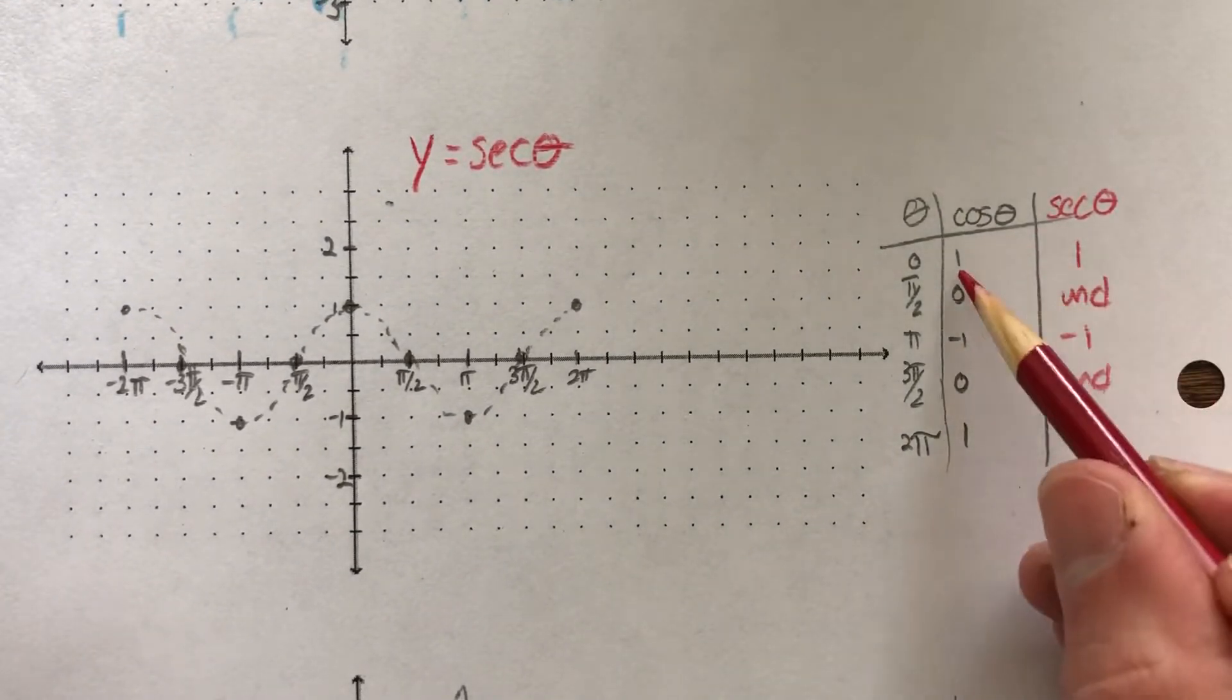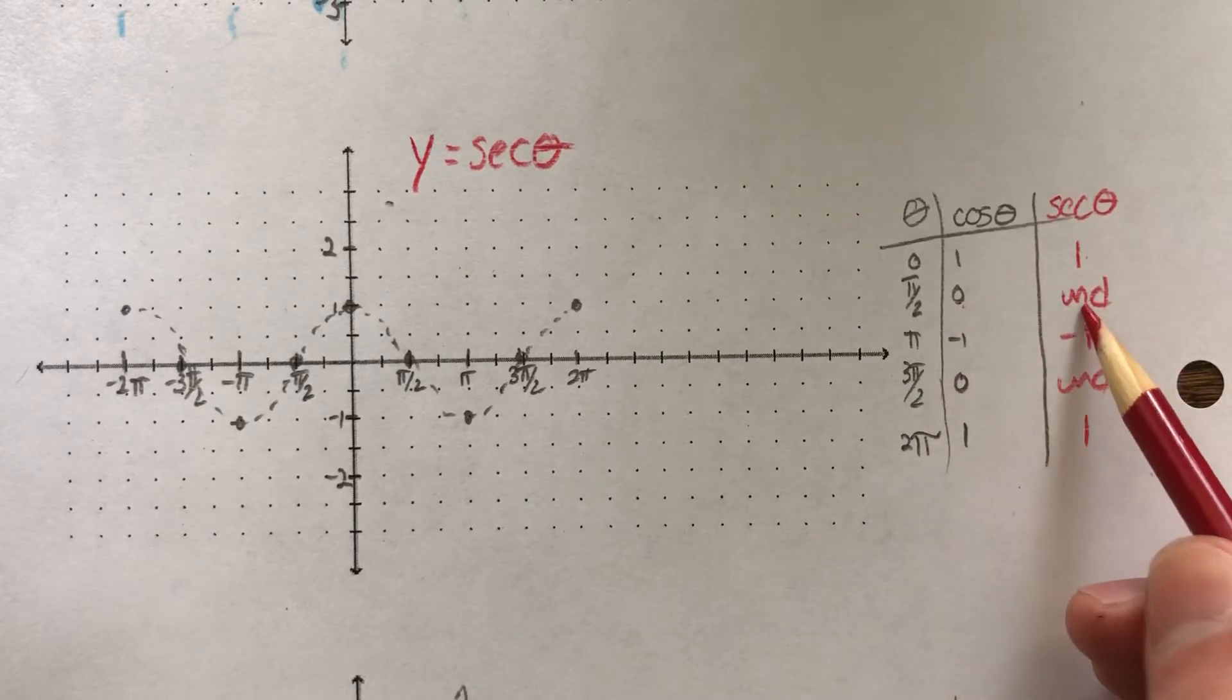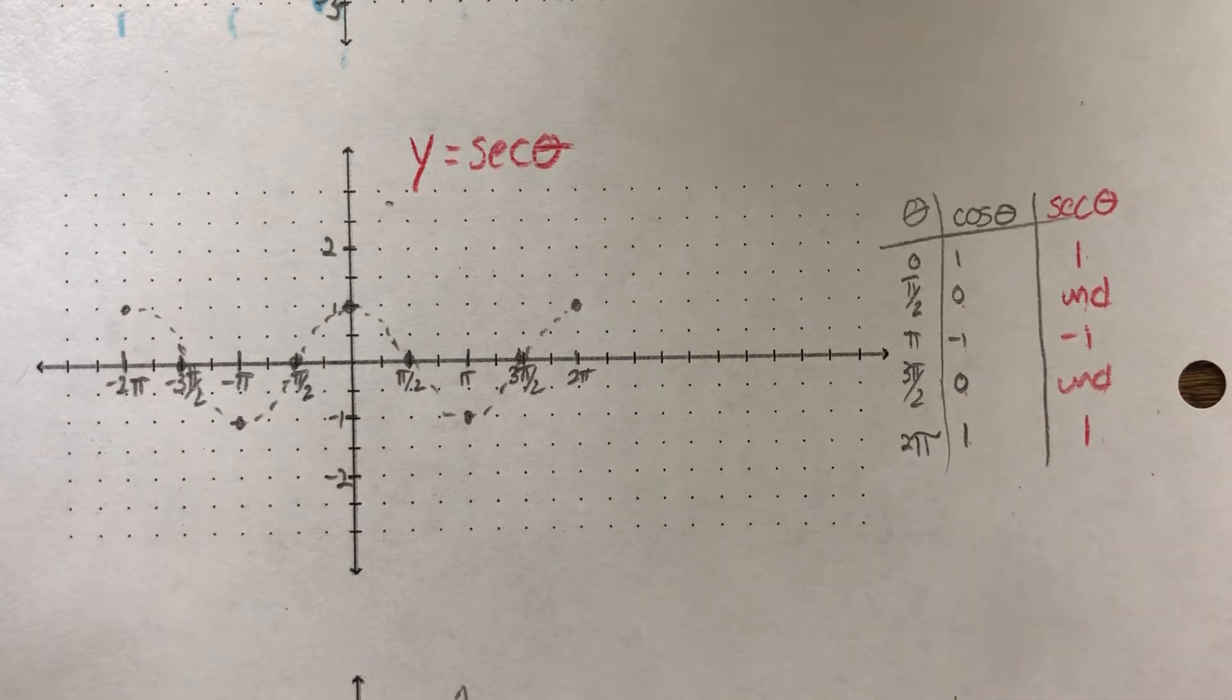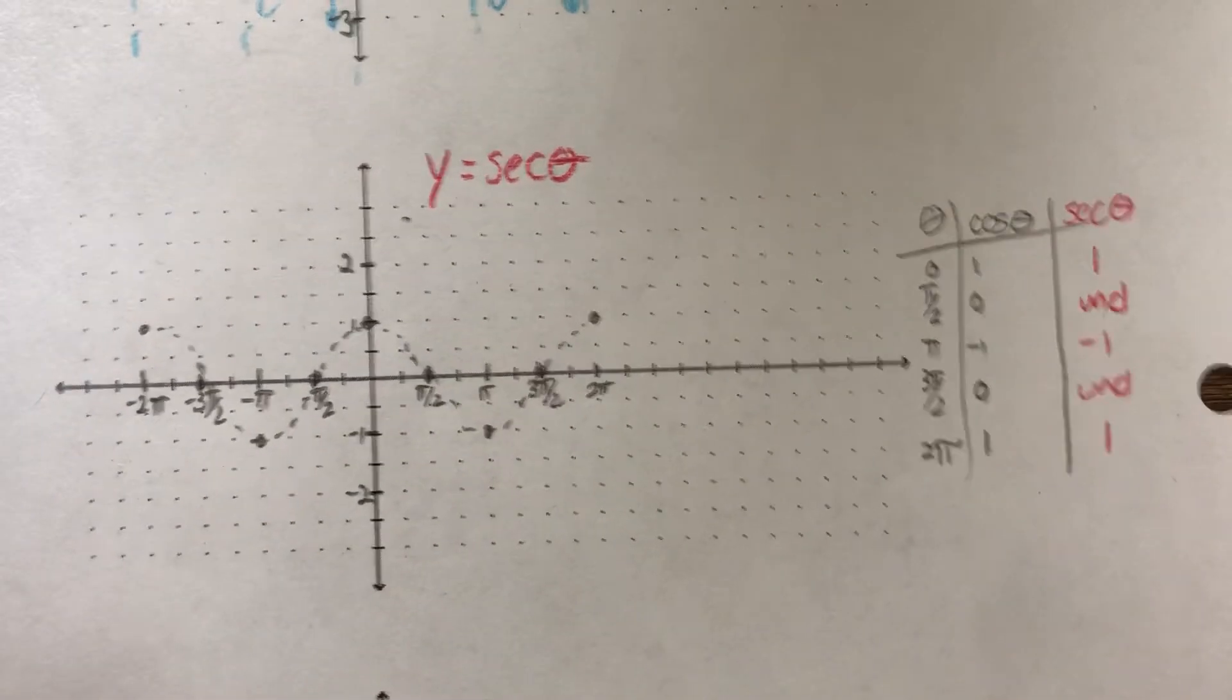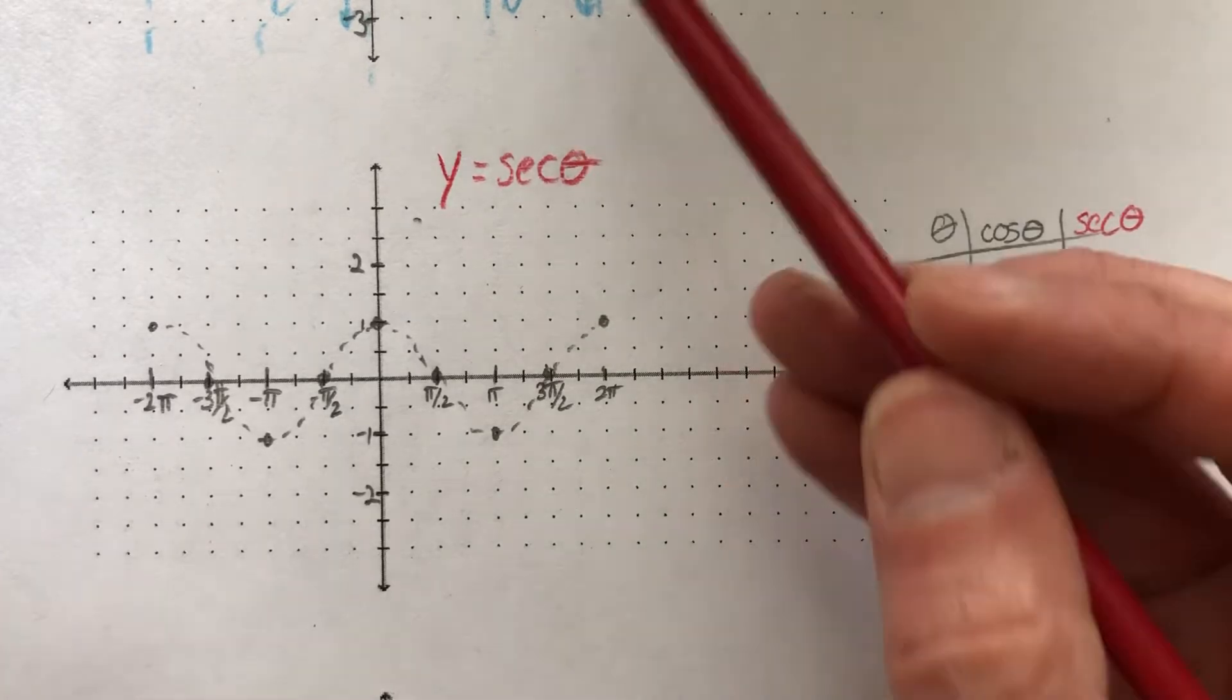So again, the reciprocal of each one of these, the reciprocal of 1 is 1. Reciprocal of 0 is undefined. Reciprocal of negative 1 is negative 1. 0 is undefined, and 1 is 1, right?